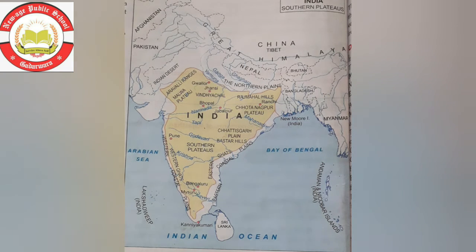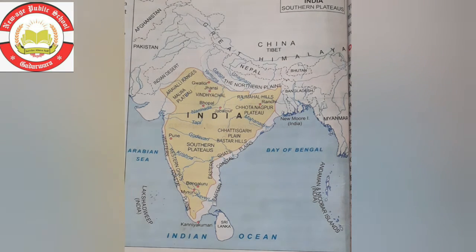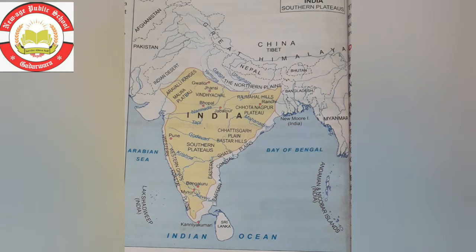The next state is Karnataka, which lies to the south of Maharashtra. The Tungabhadra and Cauvery rivers flow here. Main crops are jowar, ragi, cotton, coffee, sugarcane and spices.